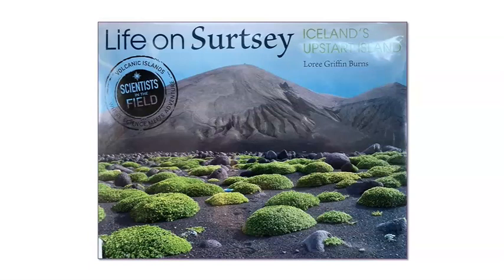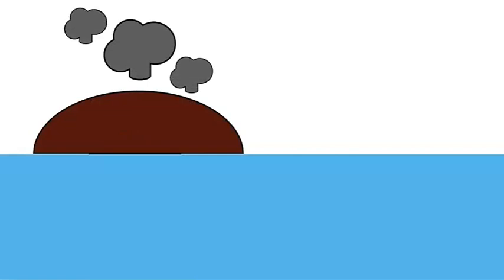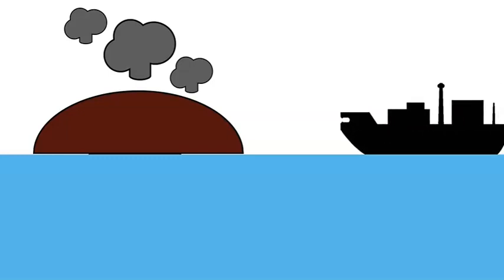Let's find out what the first scientist who arrived on Surtsey Island found. We will read some of this book titled Life on Surtsey, Iceland's Upstart Island, written by Lori Griffin Burns. From the moment its shores popped out of the sea, people were drawn to Surtsey. When the island was only three months old and still erupting, a team of scientists and reporters made one of the earliest landings. They arrived in a large ship which was anchored offshore while the team set out for Surtsey. Wow, I imagine that the scientists and reporters felt excited but nervous about what might happen as they approached the island. What do you think happened next?